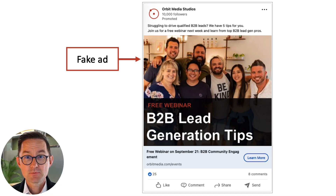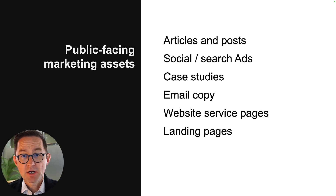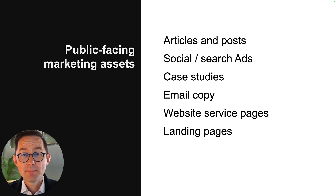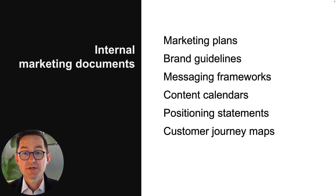Here it is. I don't know much about it. I'm just going to get some input — I've got a perspective, I could make a guess. AI can actually review things where you have no experience at all, and it can review anything. You might have publicly facing marketing assets such as articles and posts, social ads, case studies, email copy, website pages, landing pages — anything. Or even internal strategic marketing assets, things like marketing plans and brand guidelines and messaging frameworks and your content calendar, your positioning statement, customer journey maps.